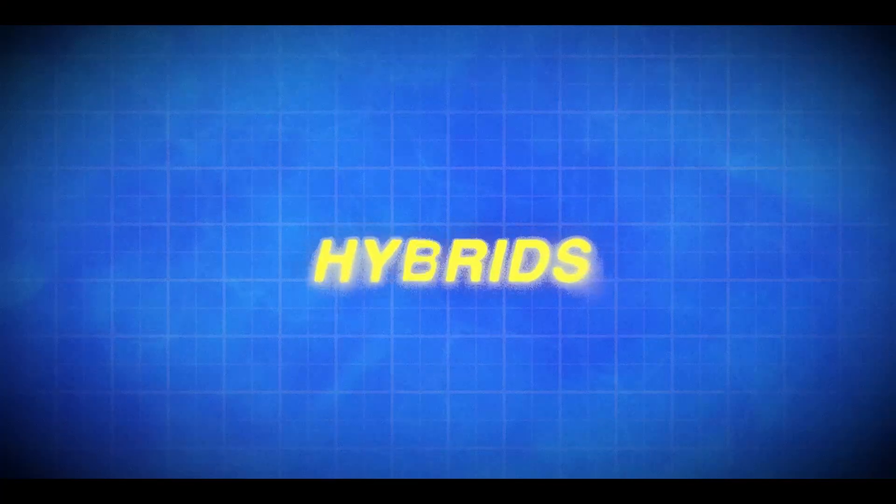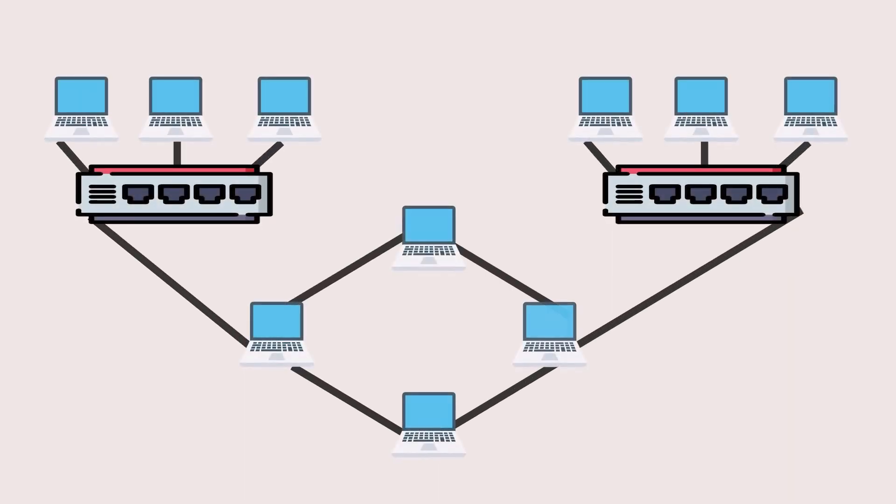Then you have your hybrid topology — a mix of multiple topologies used to optimize performance and scalability. You're going to see this a lot more often in the wild. Most enterprise networks do use hybrid designs. To ensure devices communicate effectively and efficiently, networks use protocols — rules that define how data is transmitted. Let's talk about some of the key ones you'll find on the CCNA.